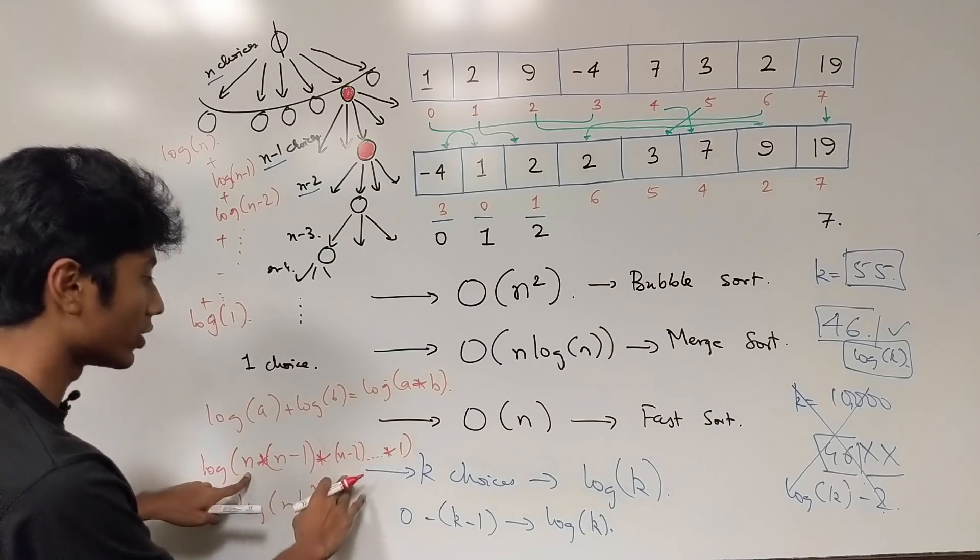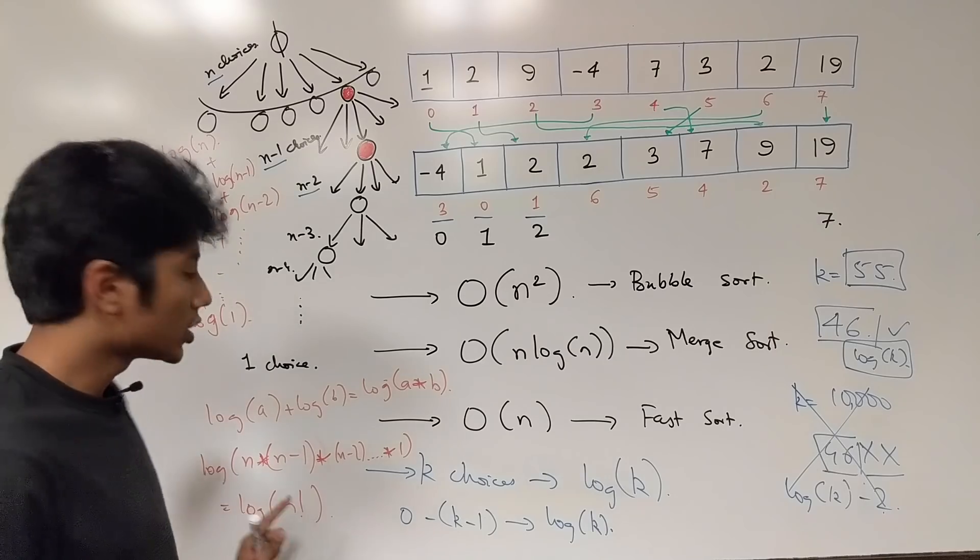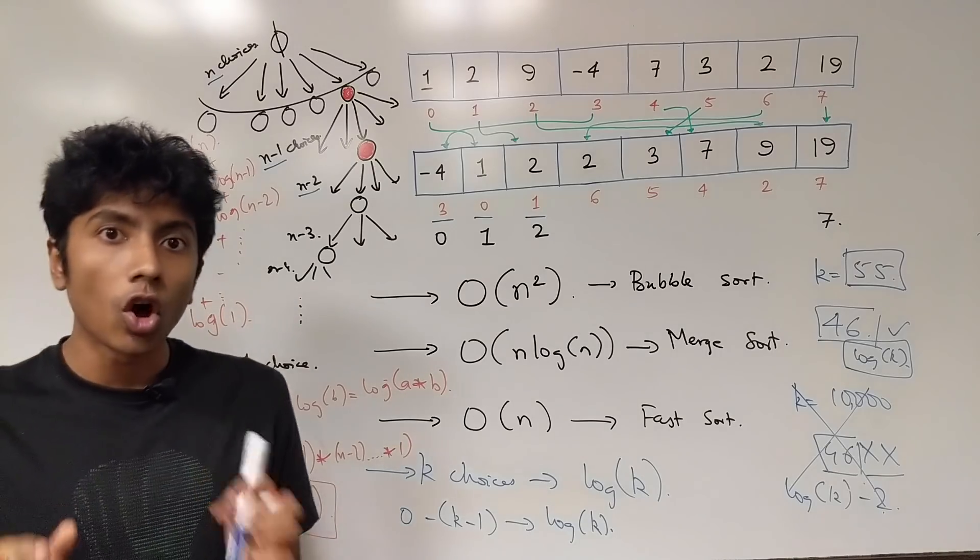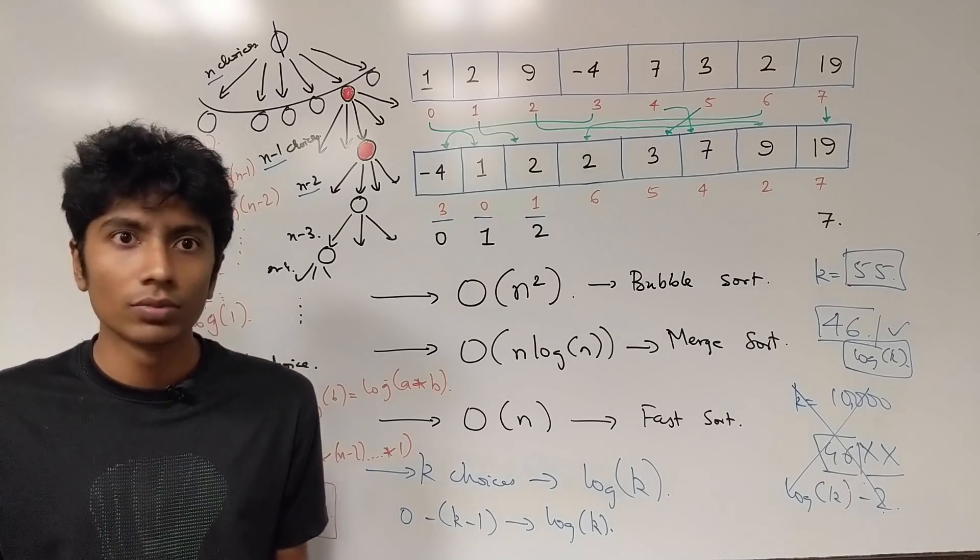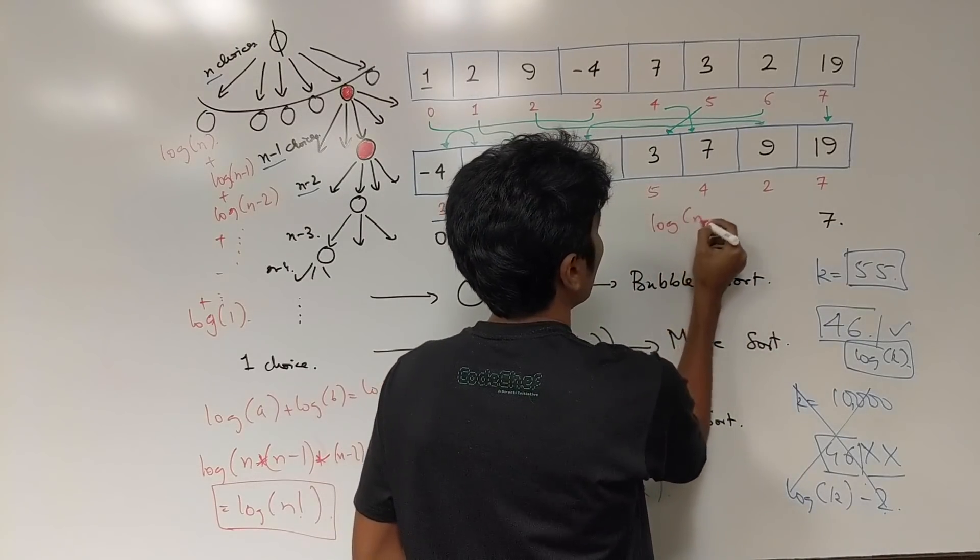Right? n into n-1 into n-2 so on and so forth up to 1. Log of n factorial is what is the minimum required time for even the most optimal possible sorting algorithm ever. This algorithm will require at least log of n factorial.